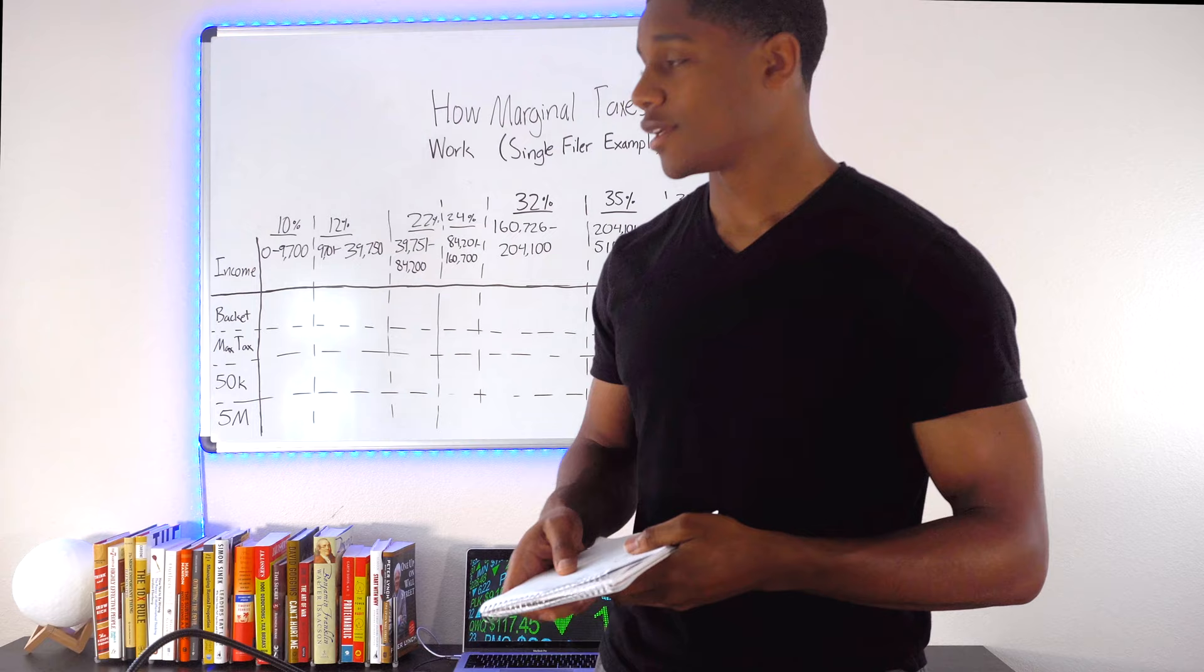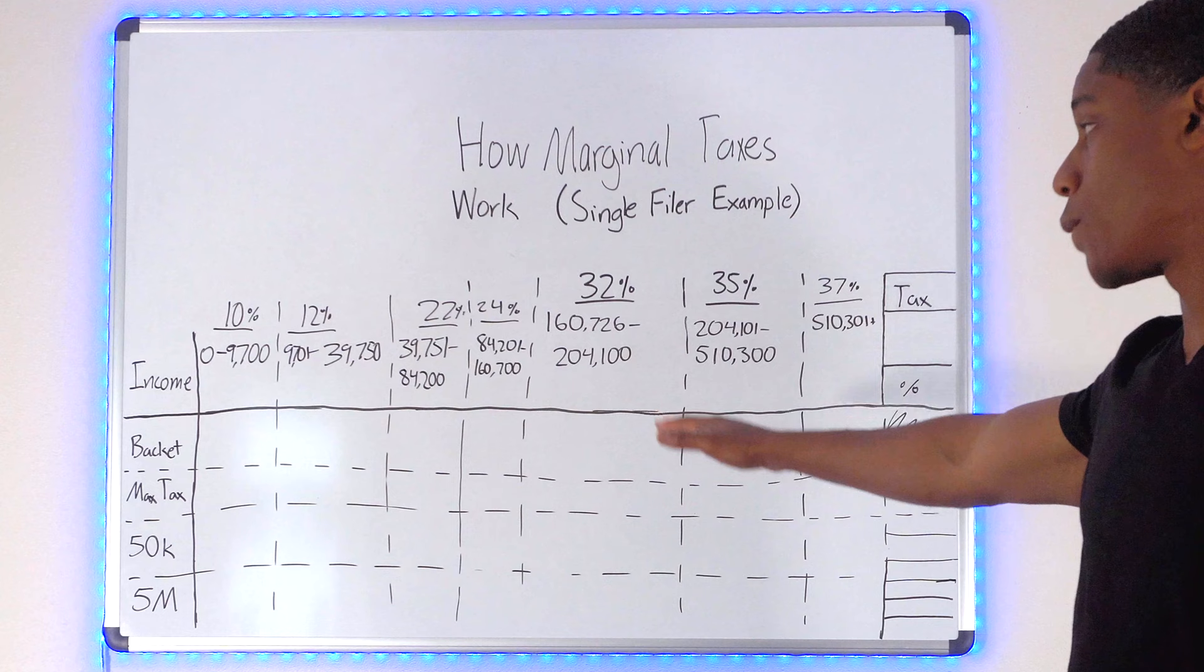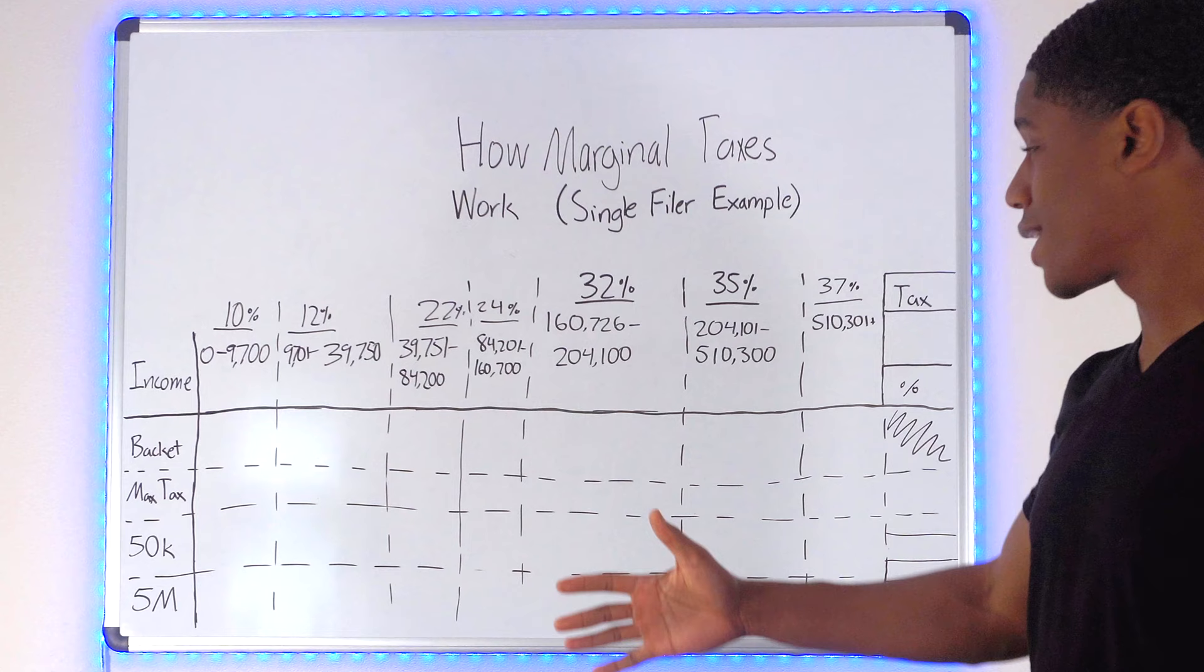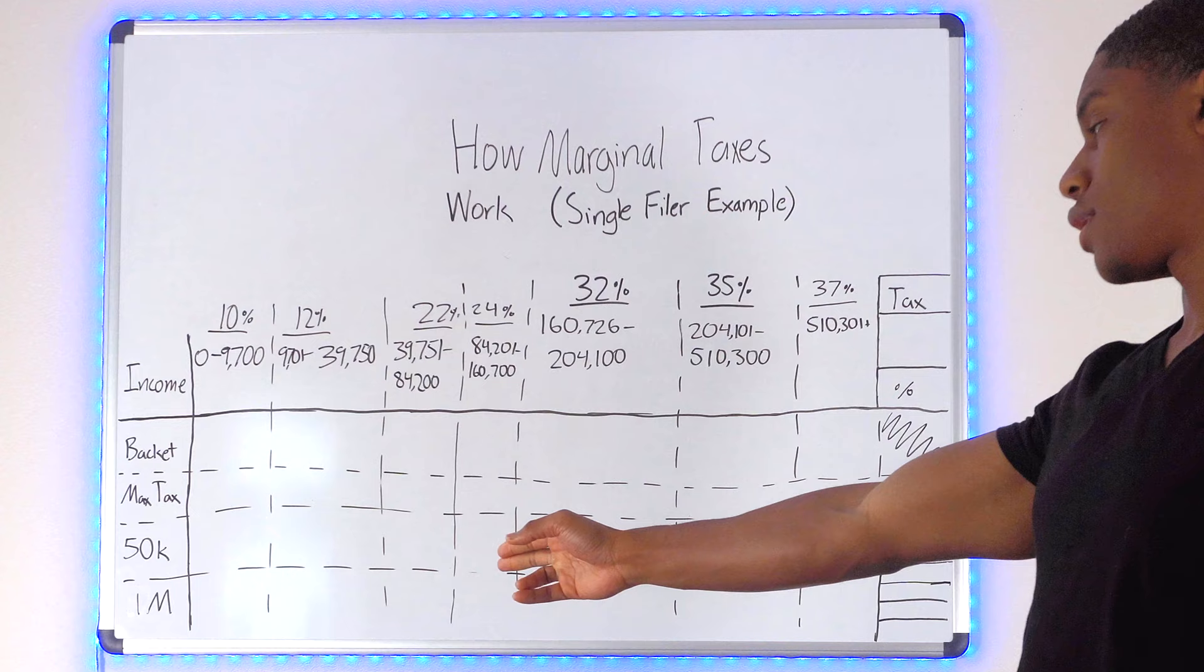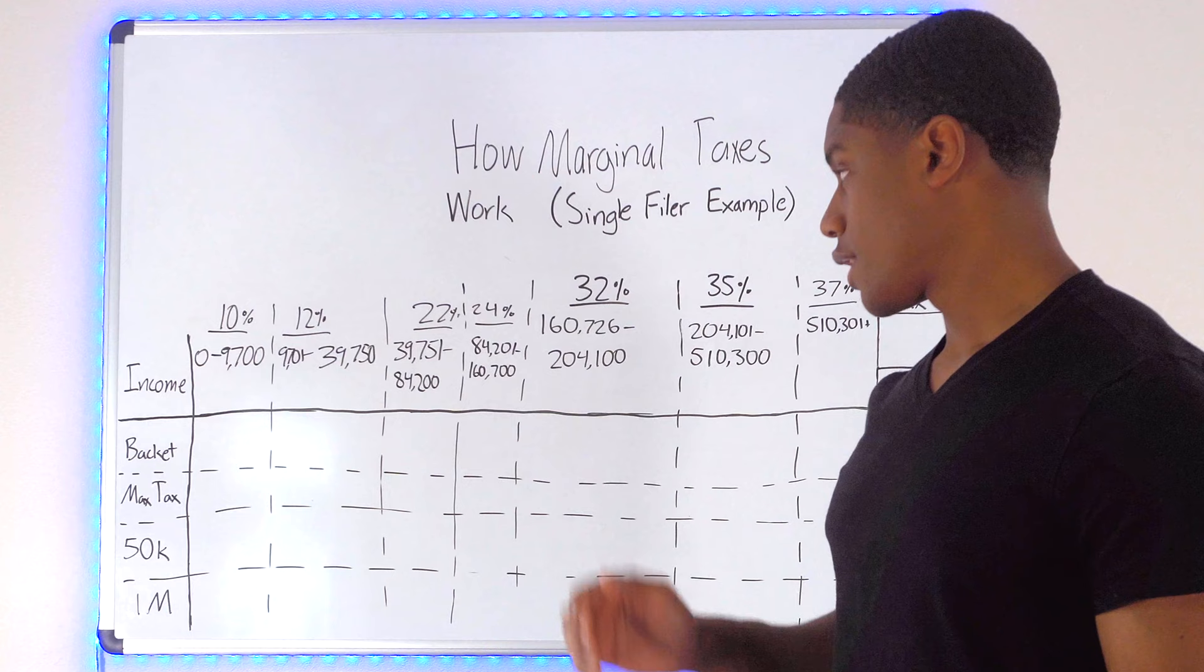Let's see what we got going on here on the board. We got a lot of comments going on on the board. Congratulations on making all this money. It's time to pay the government. Right here we've got five categories that we're going to go over.